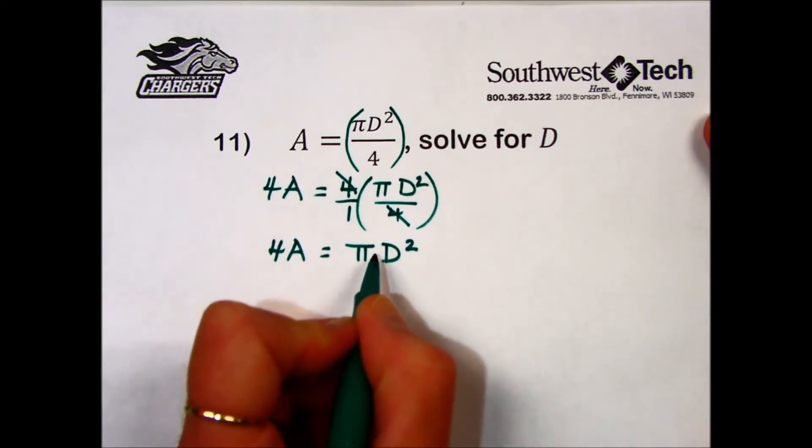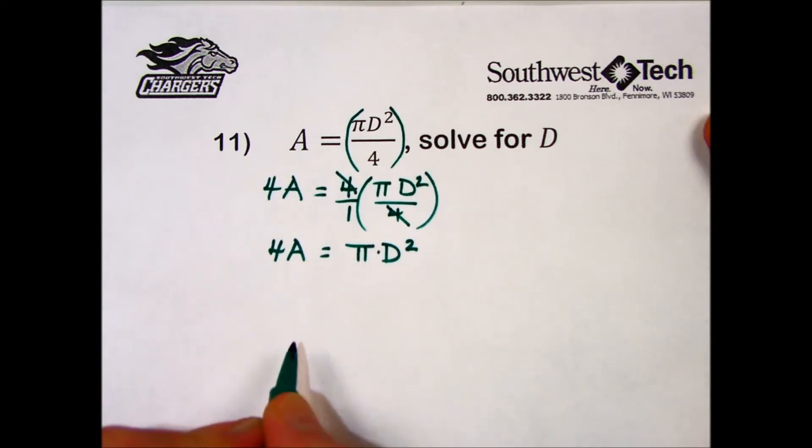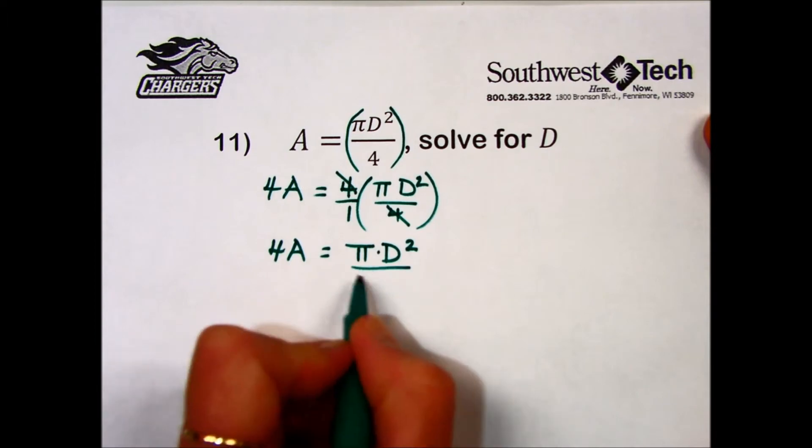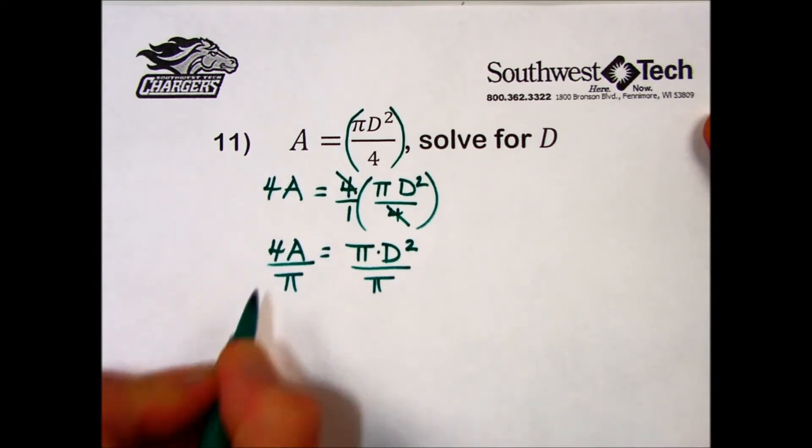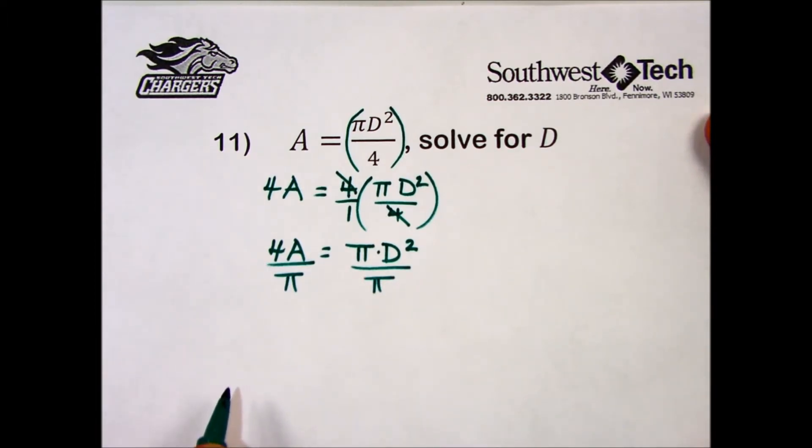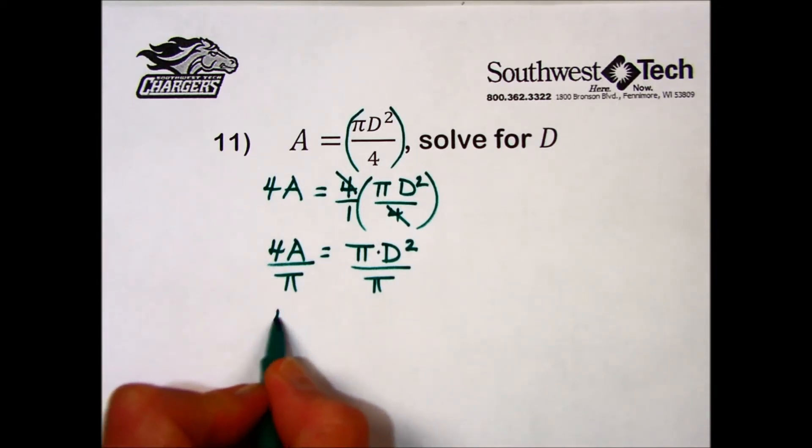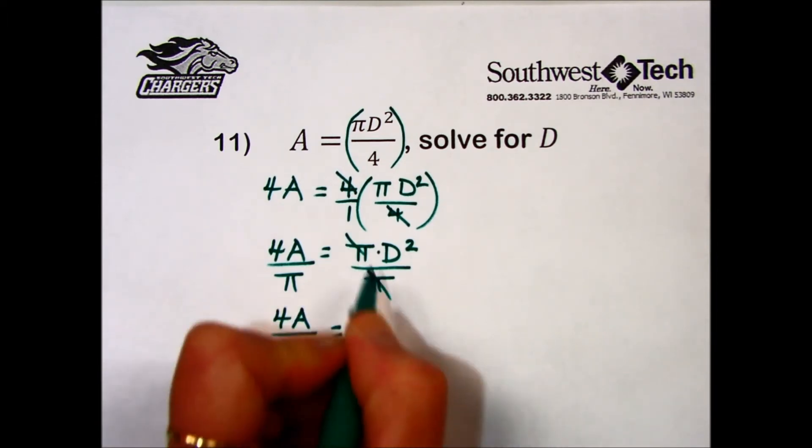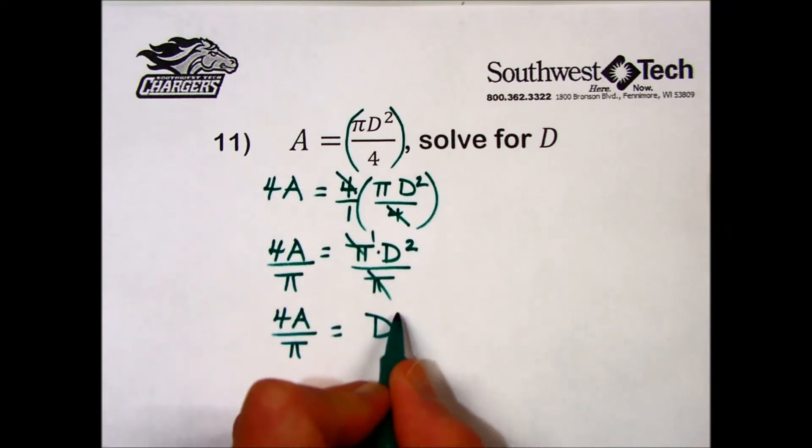Next, when we're peeling away the layers, D squared is multiplied by pi. To undo the multiplication, we divide both sides by pi, and we could have done that actually in the previous step with a 4 over pi if we wanted to treat that as a fraction and multiplying by the reciprocal. Regardless of whether we did it in two steps or one, the result is 4A over pi. The pi's cancel out, leaving a 1 times D squared.